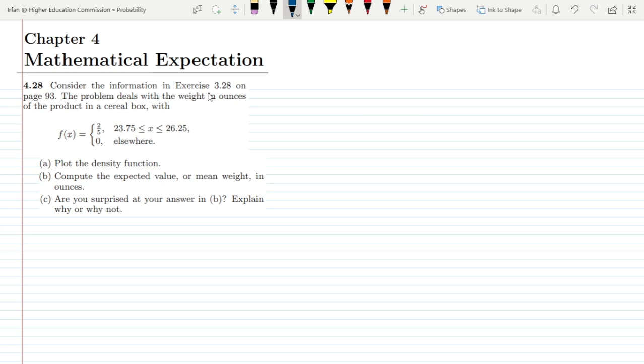Consider the information in exercise 3.28 on page 93. The problems deal with the weight in ounces of the product in a cereal box with f(x) equal to 2/5 for the range of x which is given here and 0 elsewhere.